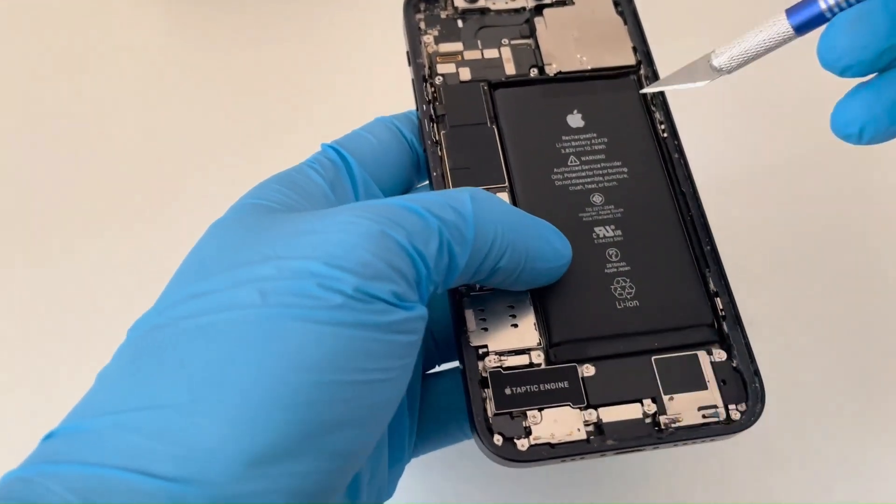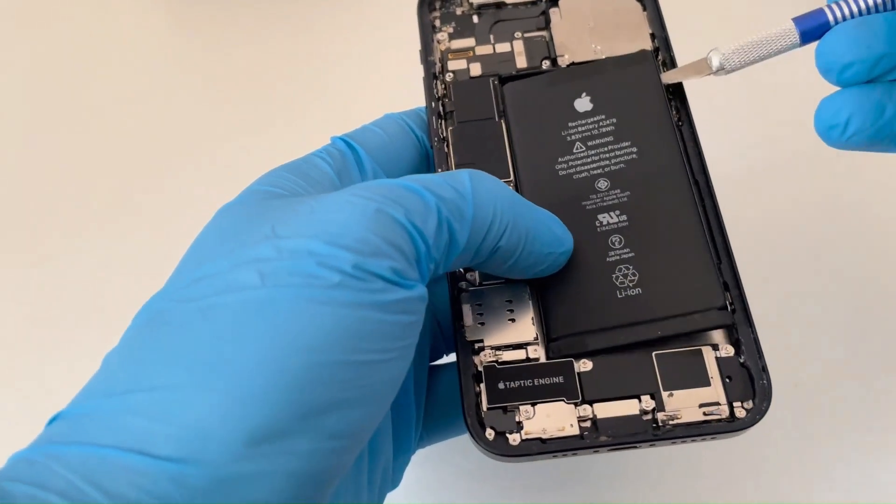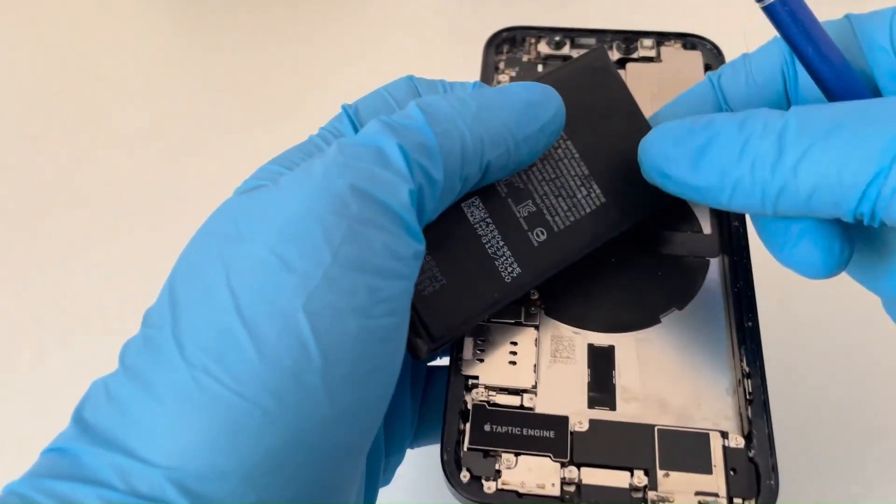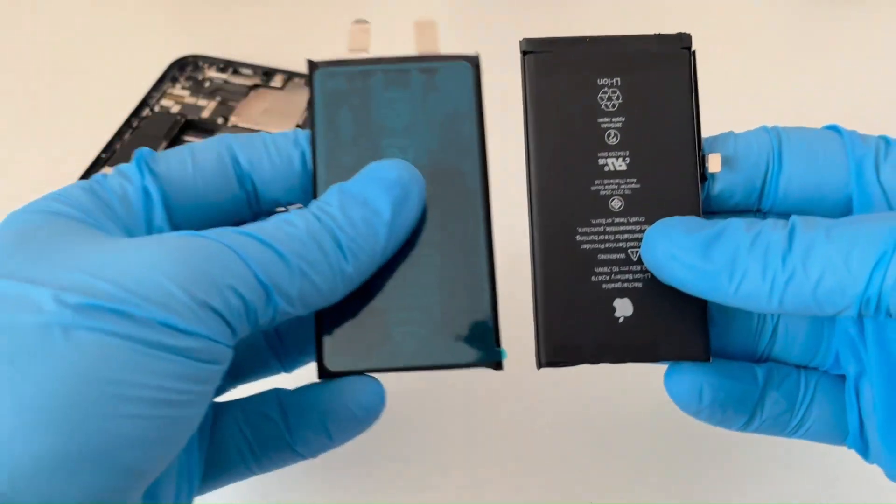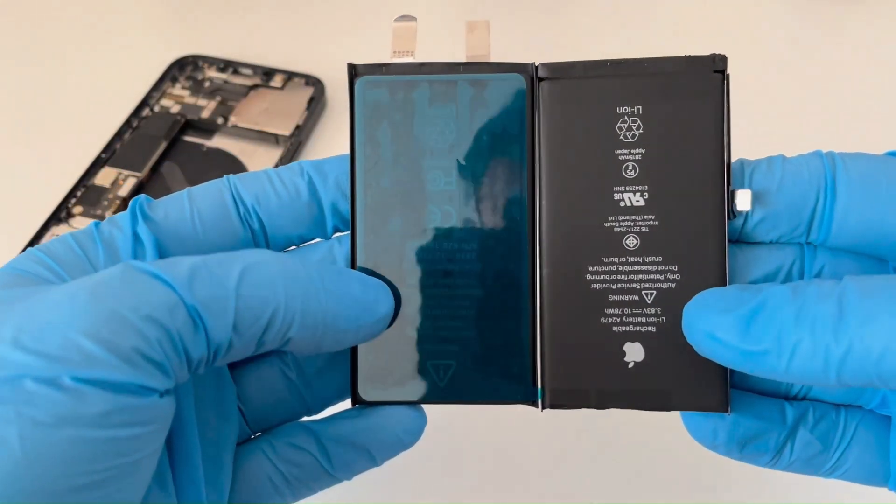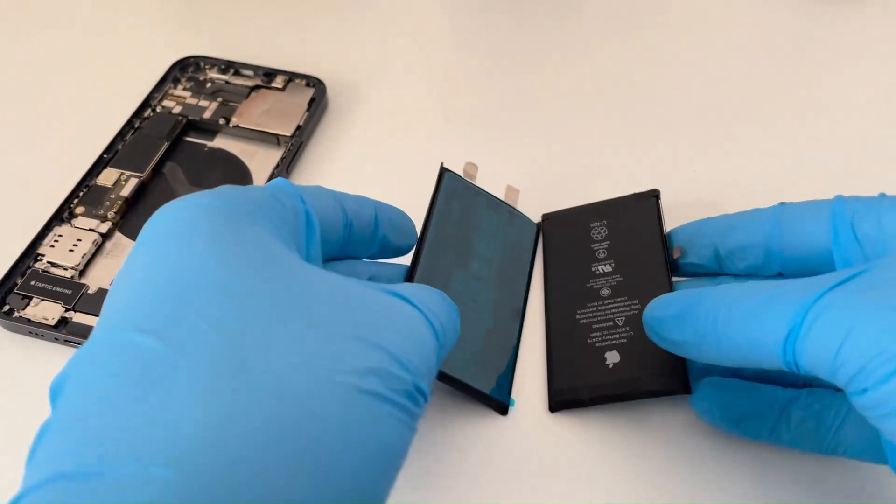After removing the adhesive tapes that hold the battery in place, I can remove it from its slot. The replacement part is this battery cell that does not contain the flex, because it will be taken from the original battery.